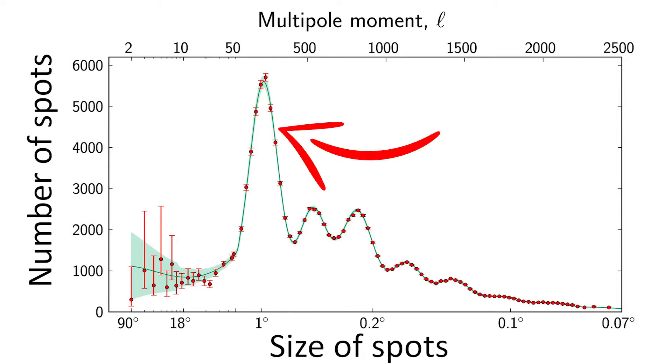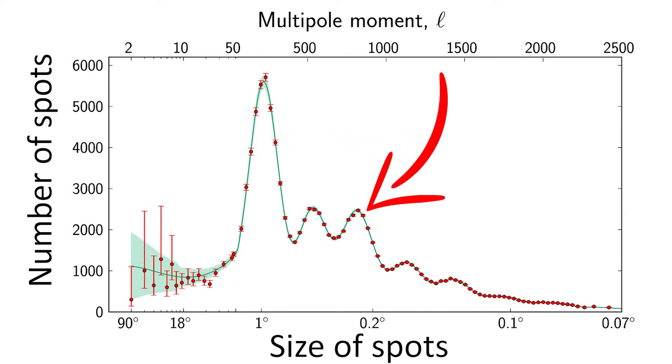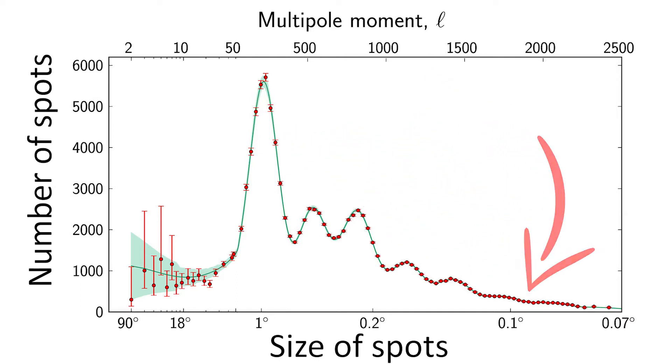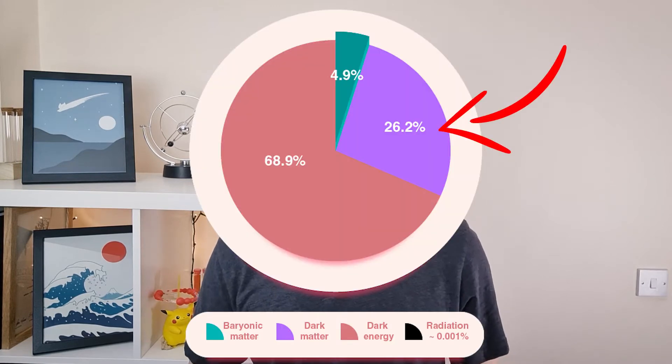This big peak corresponds to the spot size we seem to see a lot of. And then as we go to bigger sizes, we see more peaks at a few different places, which you can't really see by eye on the CMB map. It's these peaks that tell us about dark matter. We can basically predict what the power spectrum would look like for different amounts of dark matter in the universe, and the one that matches the observed power spectrum is the one where dark matter makes up about 25% of the universe.